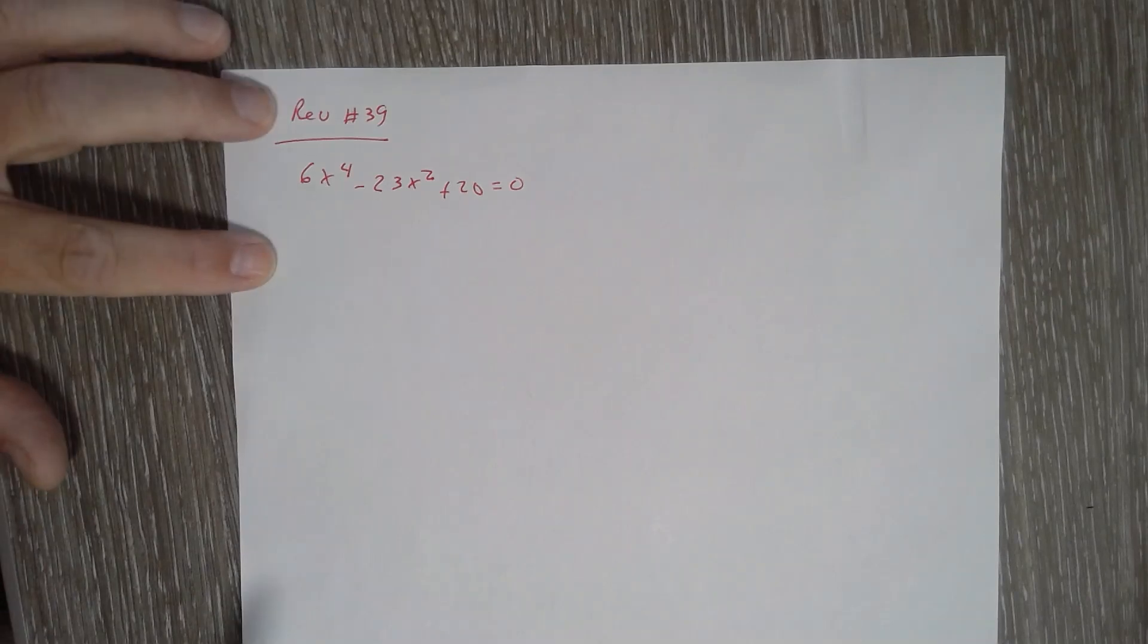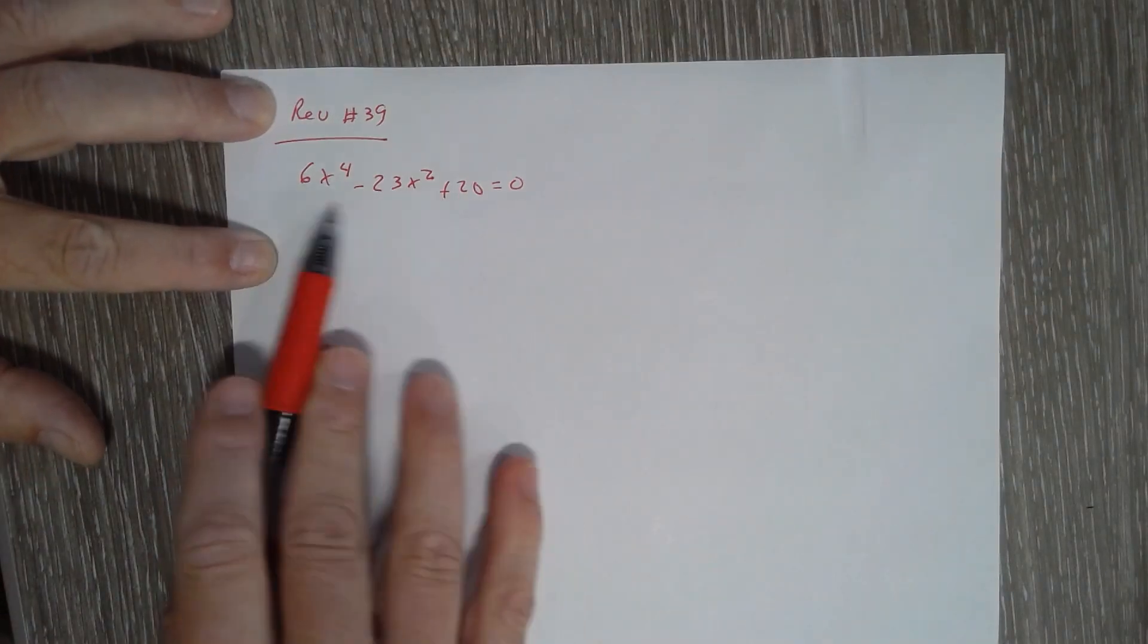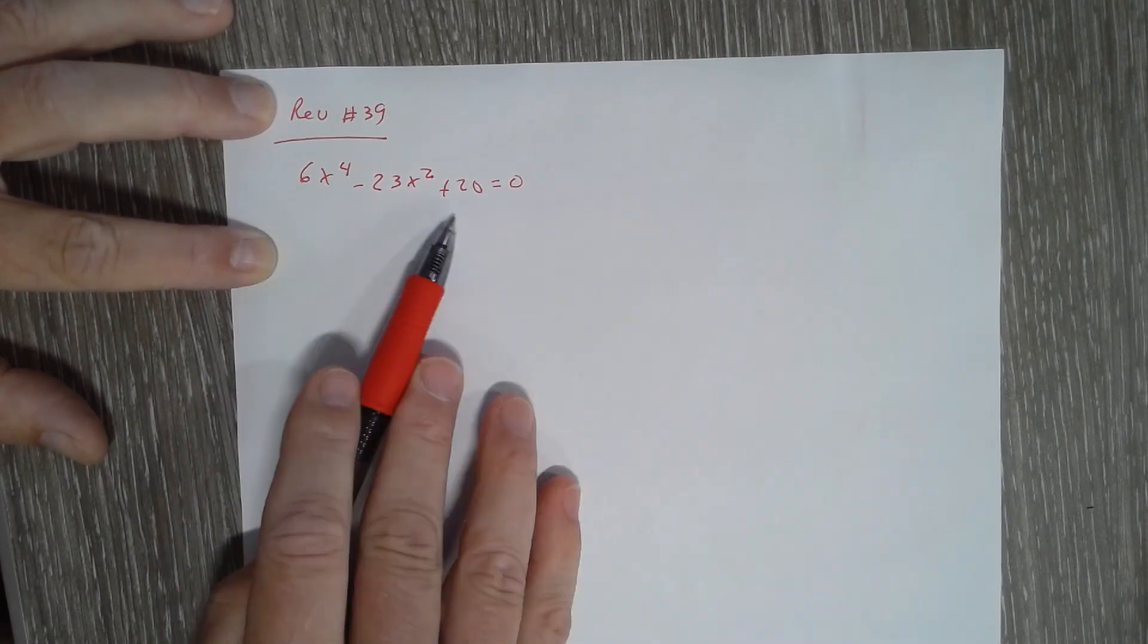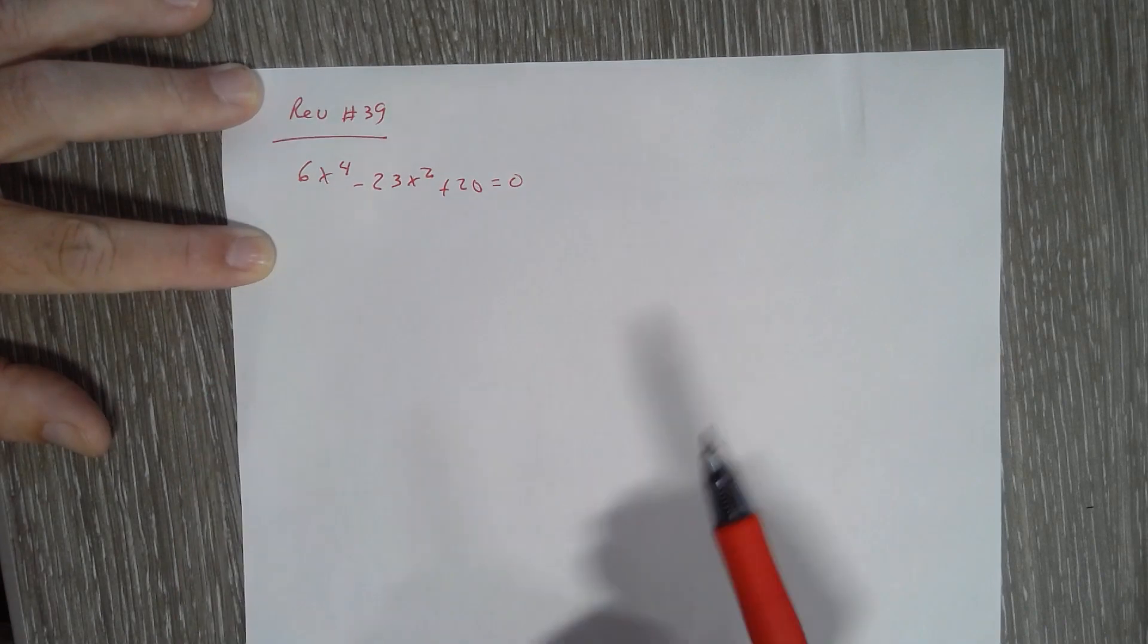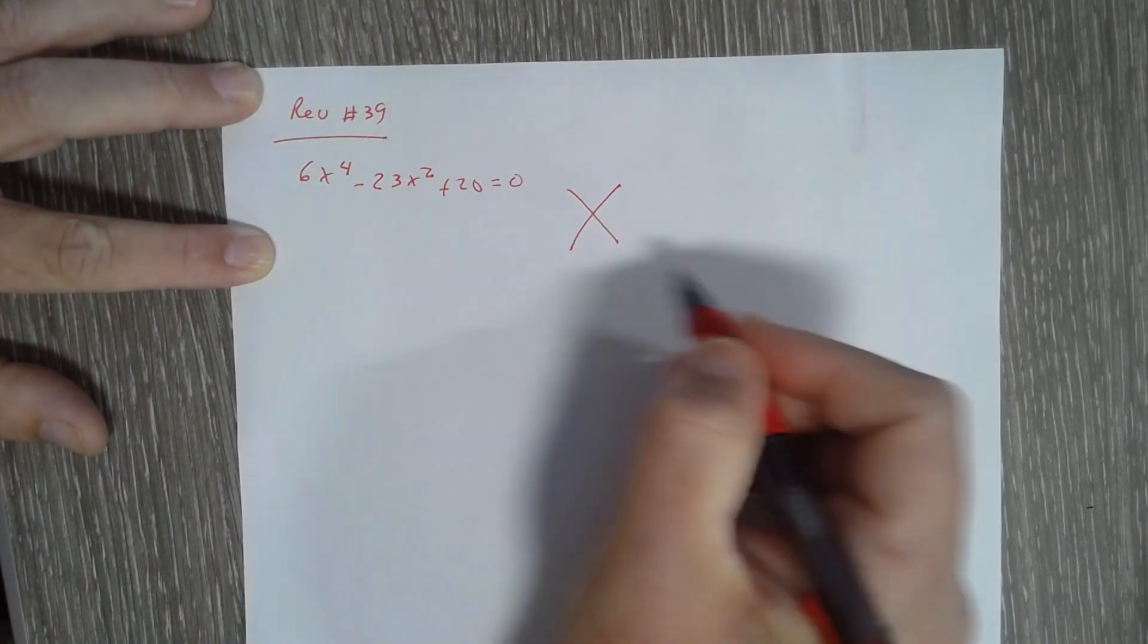Okay, chapter review number 39. When I look at this one, I see a quadratic. I see three terms. The middle exponent is half of the first. So therefore, it's nothing more than a glorified diamond problem.